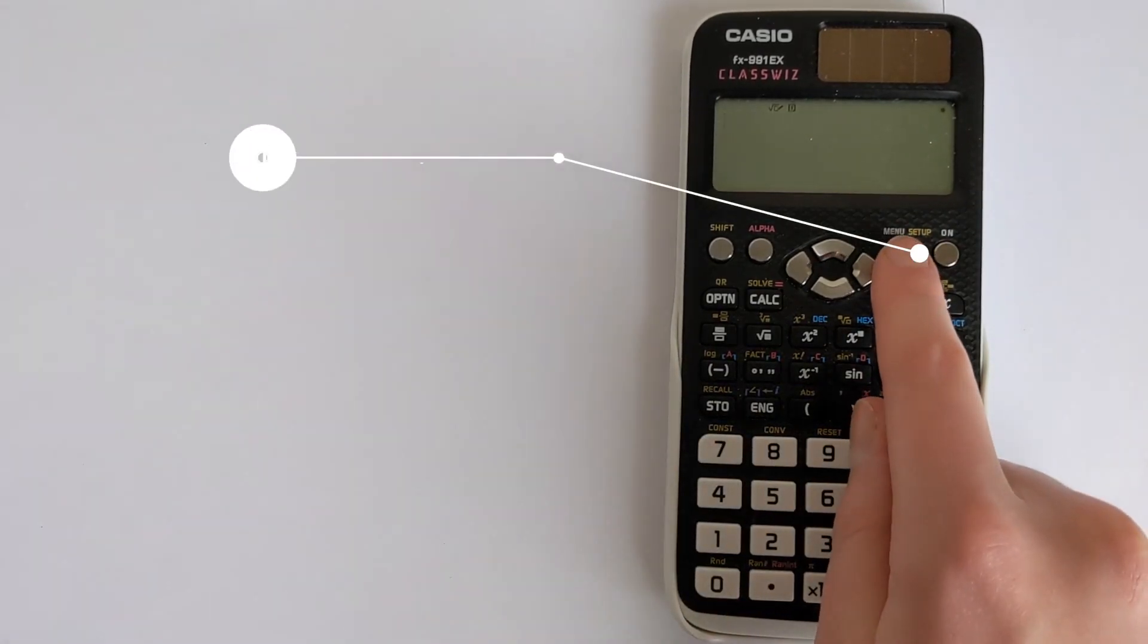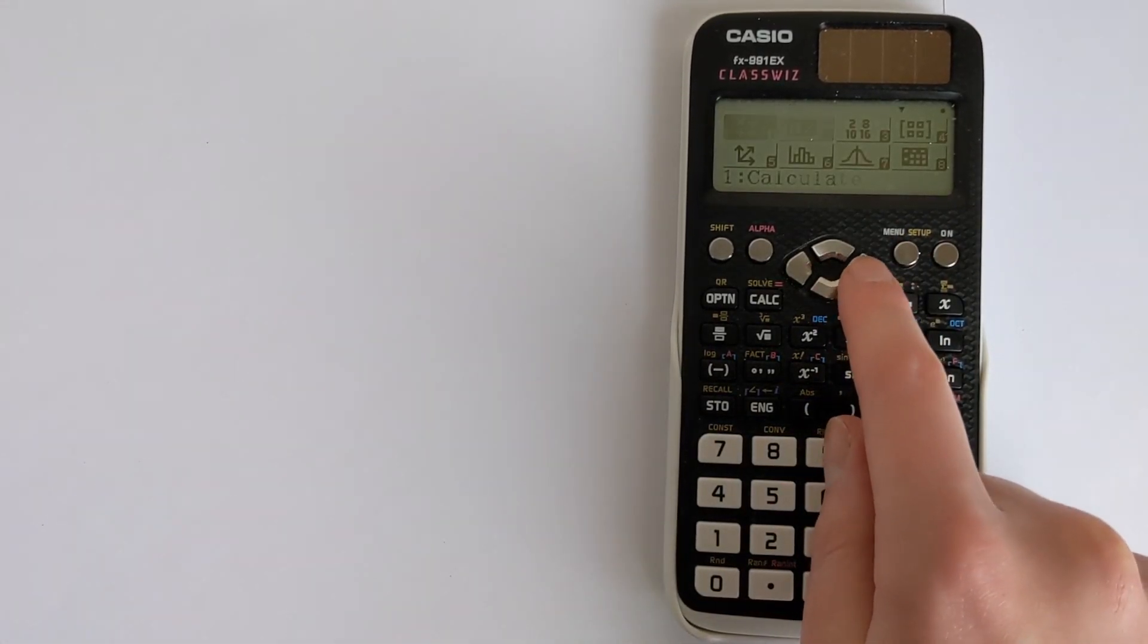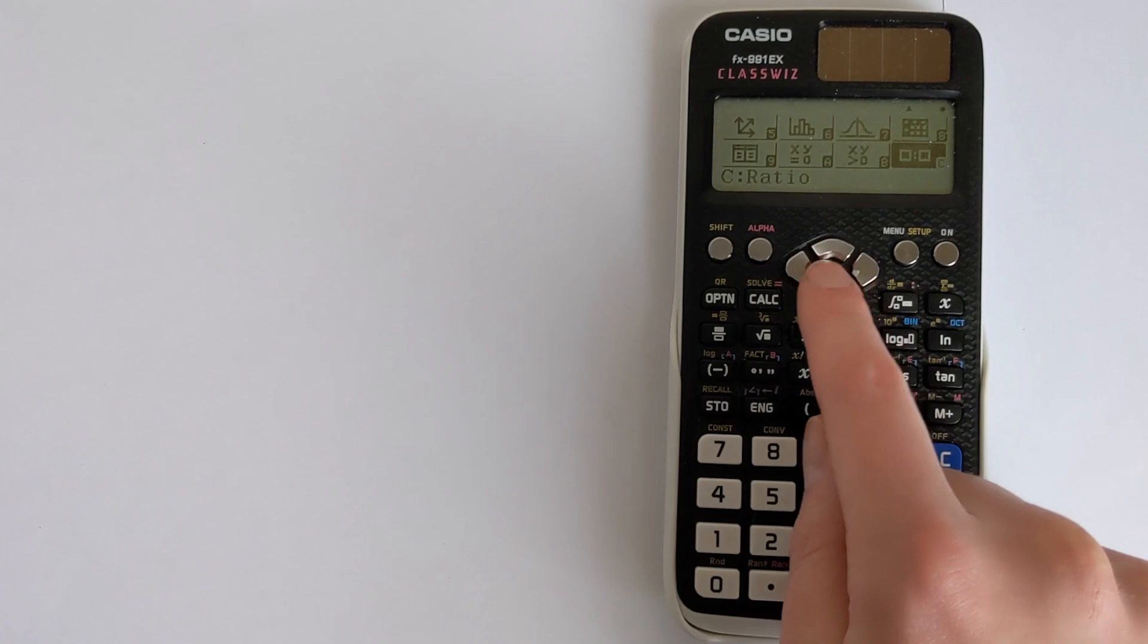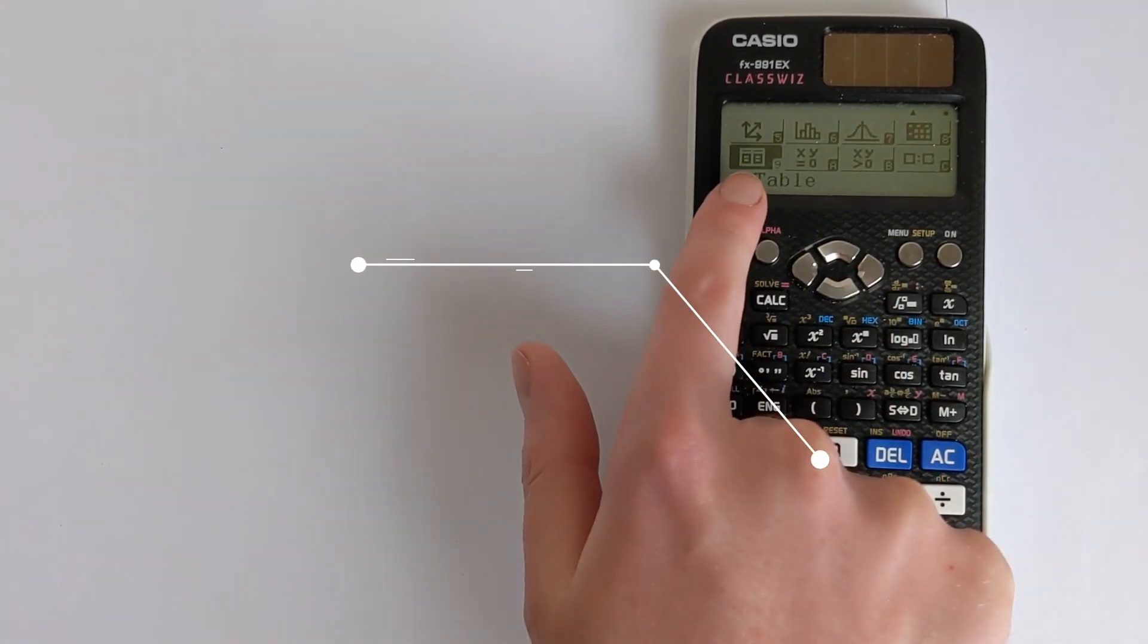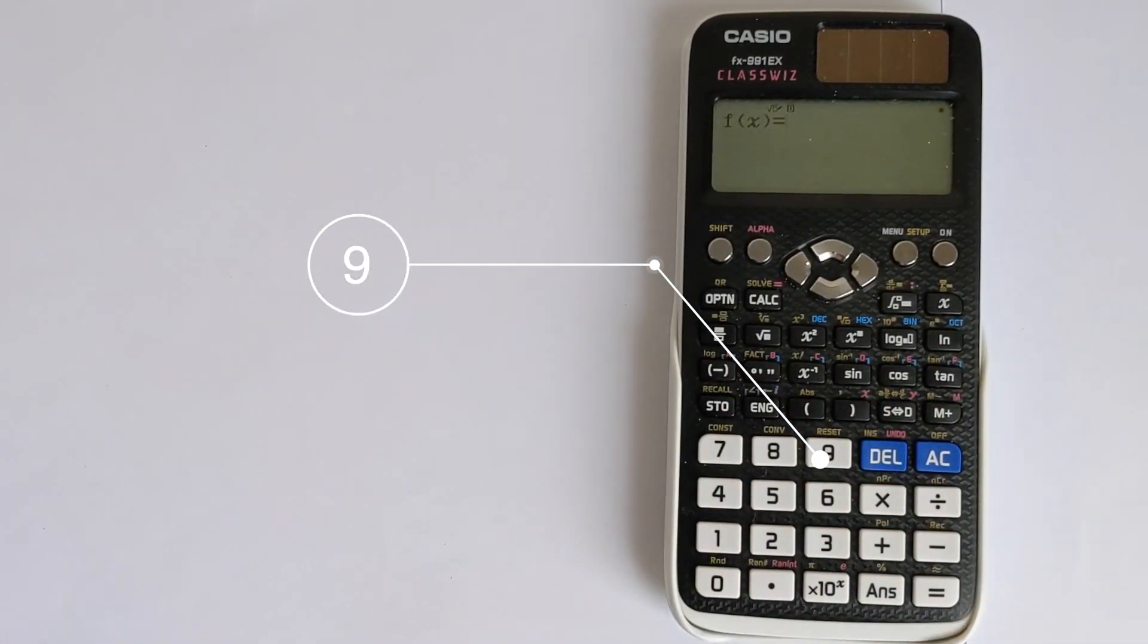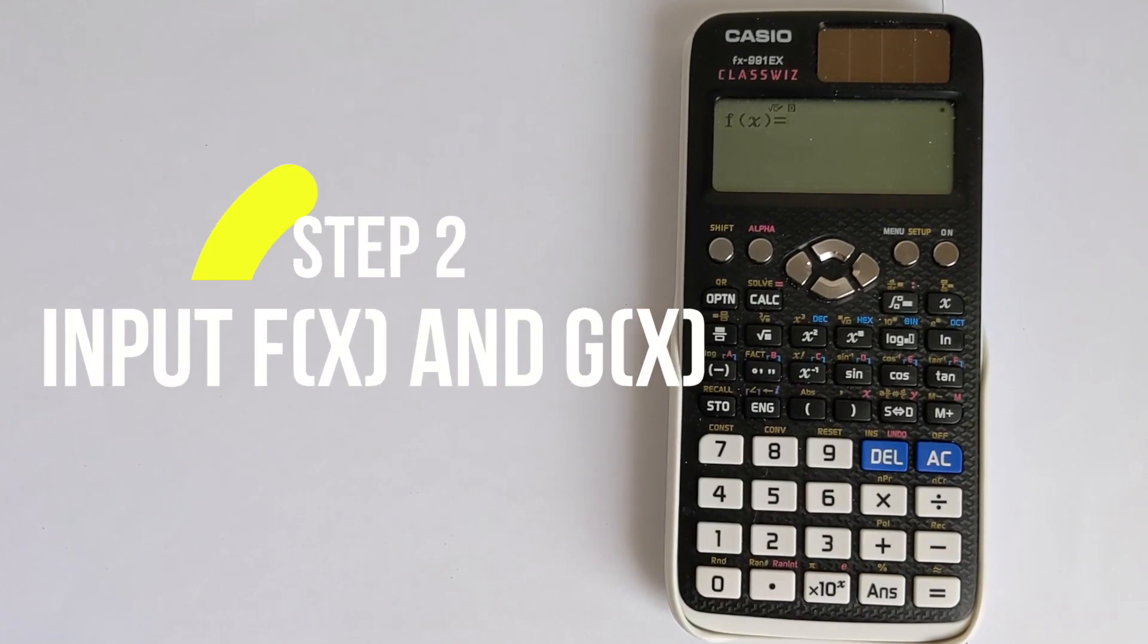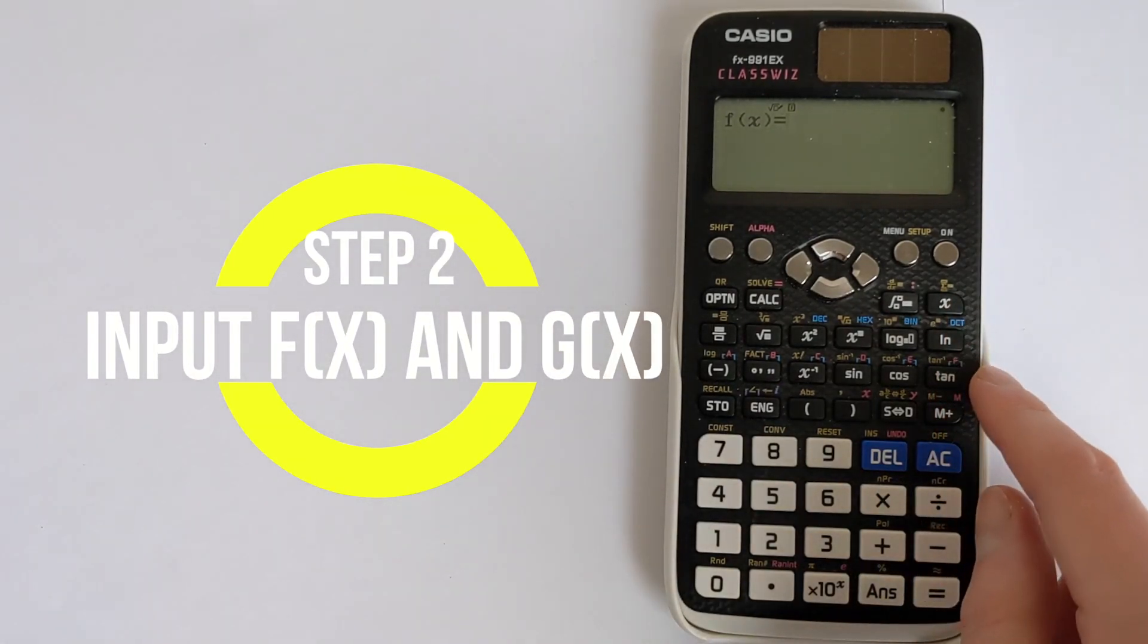So if we press menu, and then you want to go all the way to option 9 here, which says table, and this will ask for a value of f of x. And we're going to set f of x equal to the derivative.